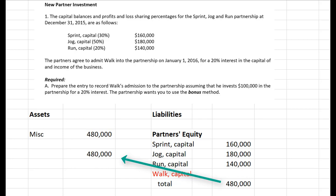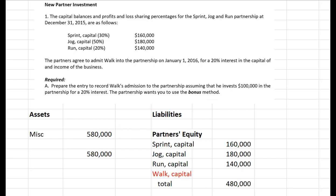Now the balance sheet is in balance, and new partner Walk is coming in. Walk invests $100,000 into the business — the money is going into the partnership, so it needs to become part of the partnership's balance sheet. He's investing cash, which is an asset, so I'm going to add it to the partnership's assets, raising them from $480,000 to $580,000. You'd be tempted to say Walk starts with a capital balance of $100,000, but we have another criteria: Walk's capital balance has to equal 20% of the partnership's assets. 20% of $580,000 is $116,000.